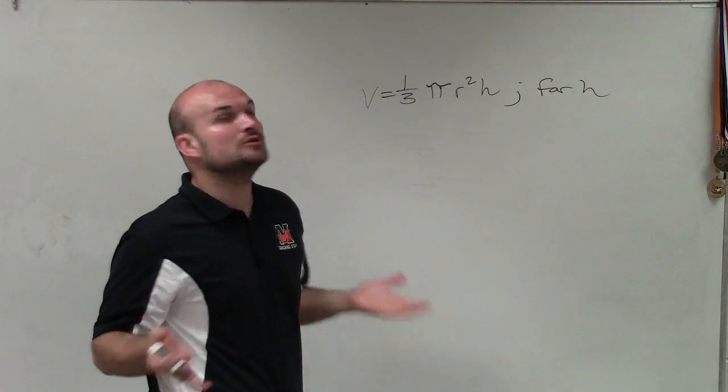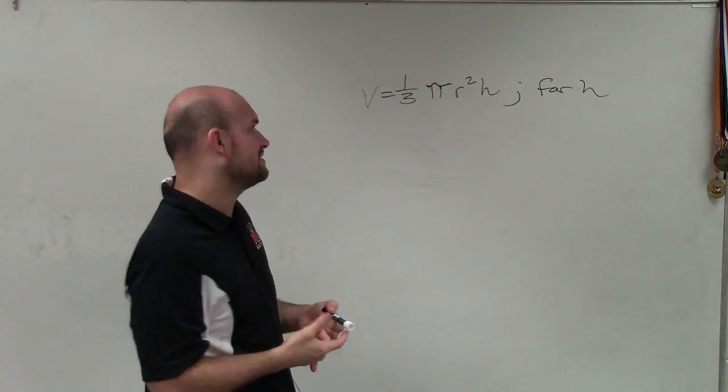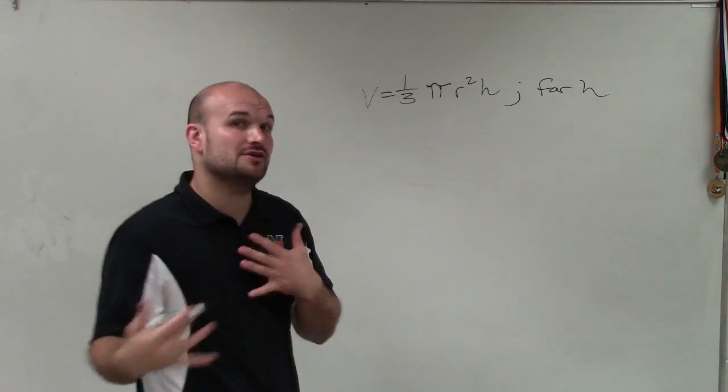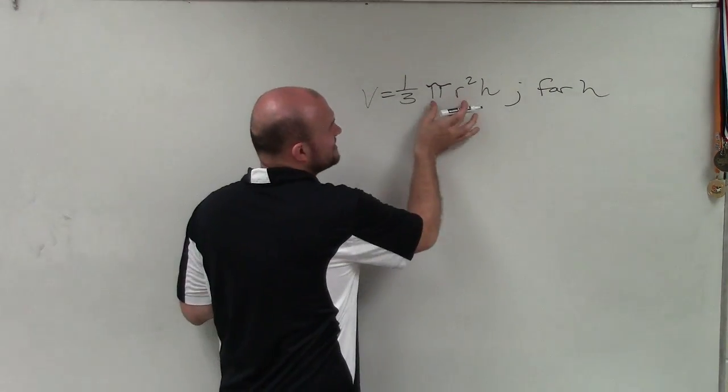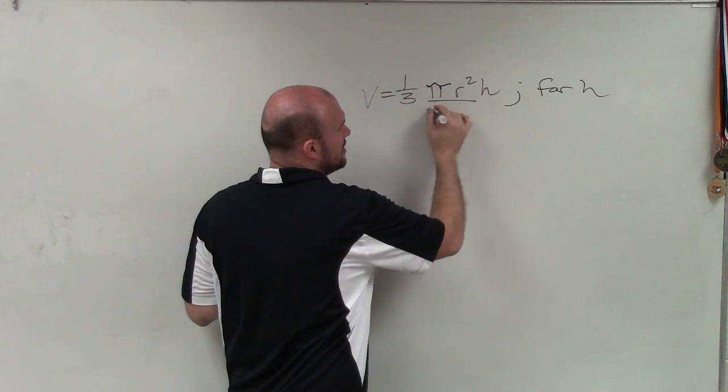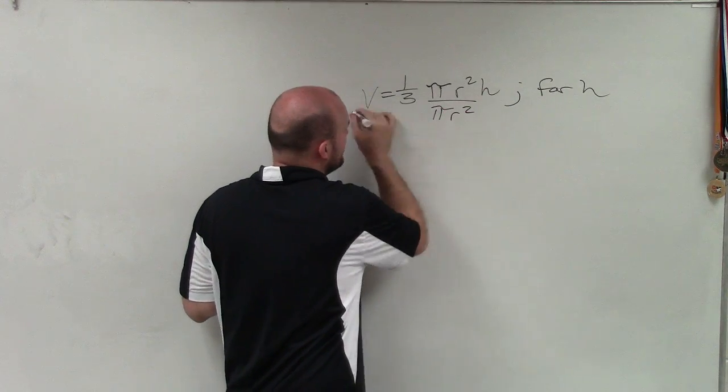Now, one thing I'm going to do is I'm going to do them kind of separately, even though you can do them all together. But I see that I'm multiplied by pi and r squared, so I'm going to divide out the pi r squared on both sides.